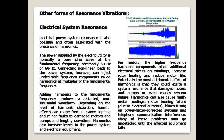Electrical system resonance: electrical power system resonance is possible and often associated with the presence of harmonics. The power supplied by the electric utility is normally a pure sine wave at the fundamental frequency — commonly 50 Hz or 60 Hz. Connecting non-linear loads to the power system can inject undesirable frequency components called harmonics at multiples of the fundamental frequency. Adding harmonics to the fundamental frequency produces a distorted, non-sinusoidal waveform.